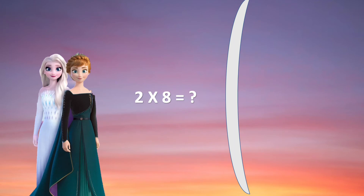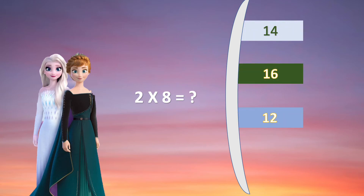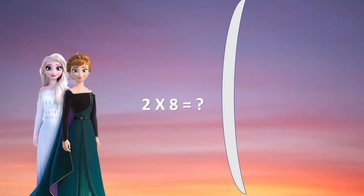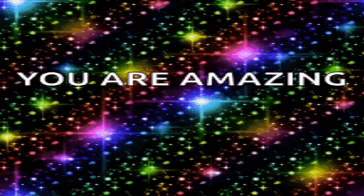Our next question is about Elsa and Anna — who likes Elsa and Anna here? The question is: What is 2 × 8? The options are 14, 16, 12, and 18. The correct answer is 16. You are amazing!